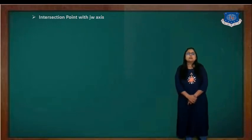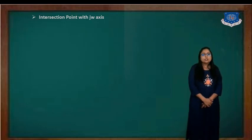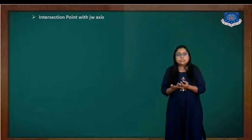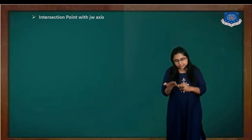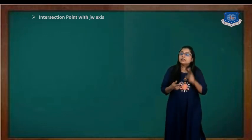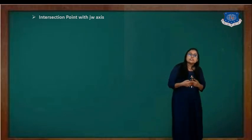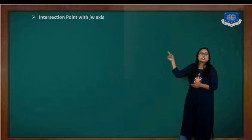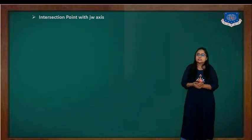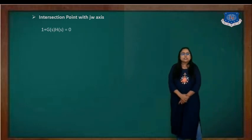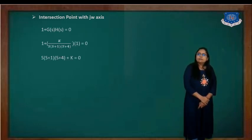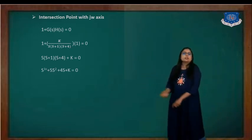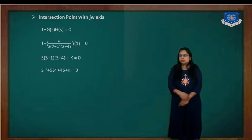Now the next step is the intersection point with the j-omega axis. Here we have angles of asymptotes at 60, 180, and 300 degrees. Since 60 degrees is less than 90 degrees, that's why we are finding this step — the intersection point with the j-omega axis. Again for that we require the characteristic equation, and we will solve it using the Routh-Hurwitz criterion.